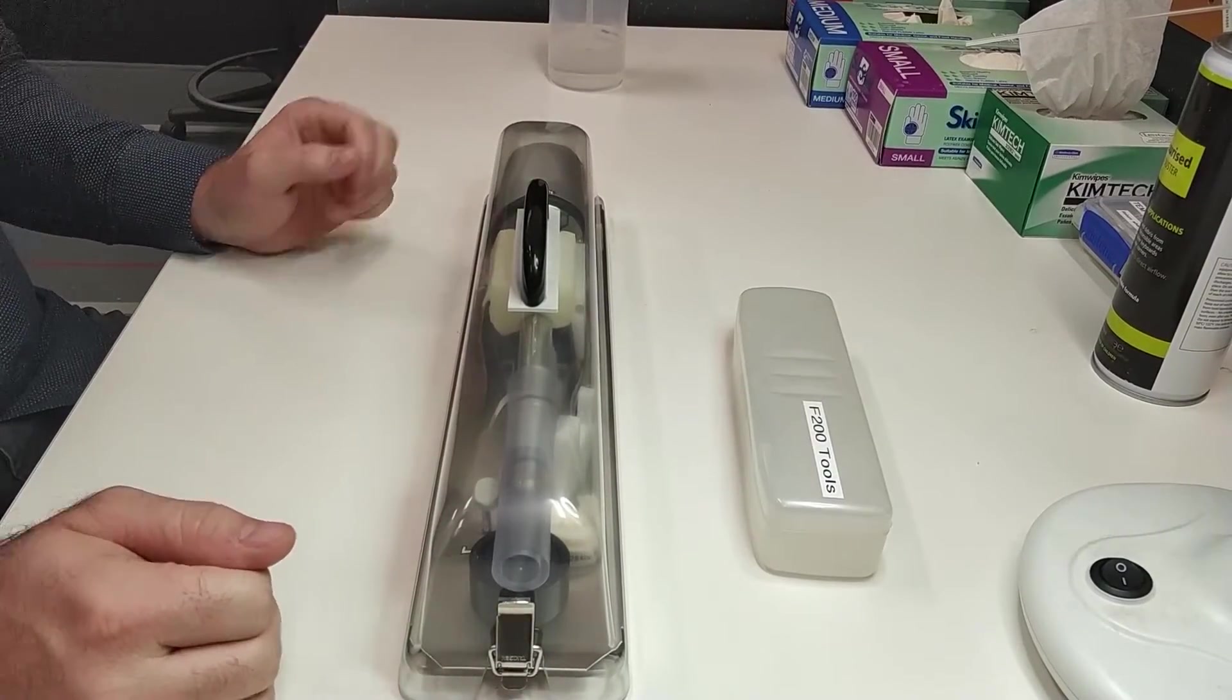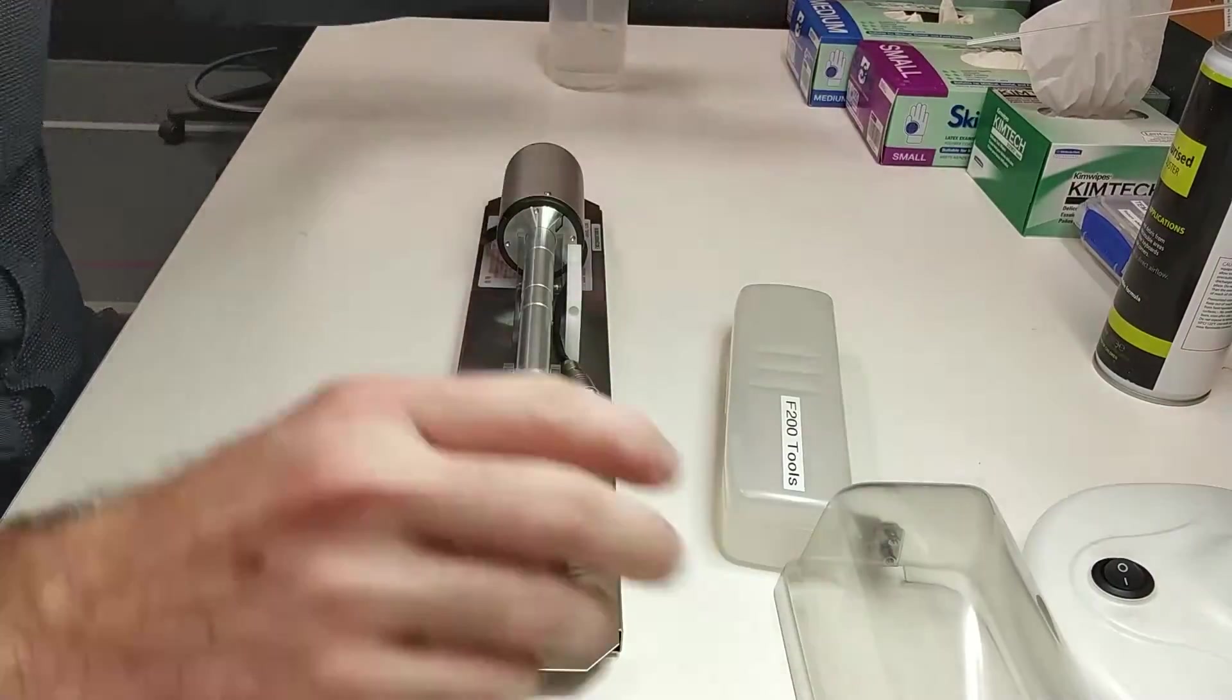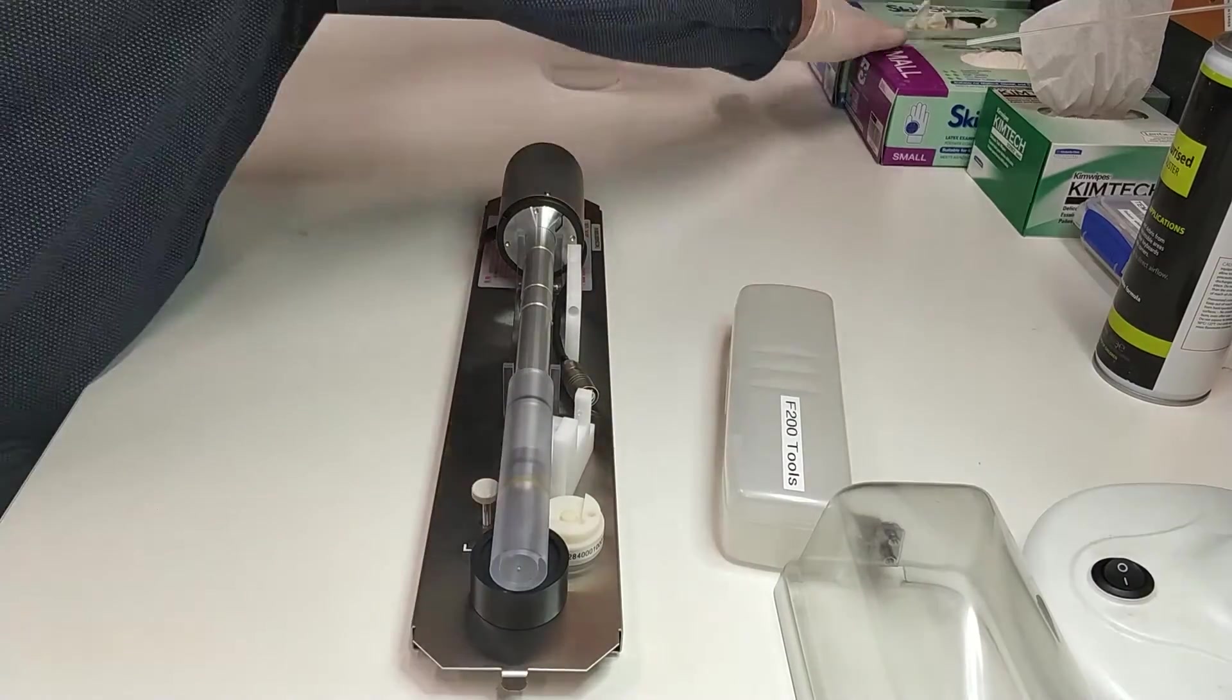We'll start by removing the top cover. Unclip the clasp and place it to the side. Time for some gloves. Gotta make sure to keep my greasy mints from touching anything going inside the vacuum.